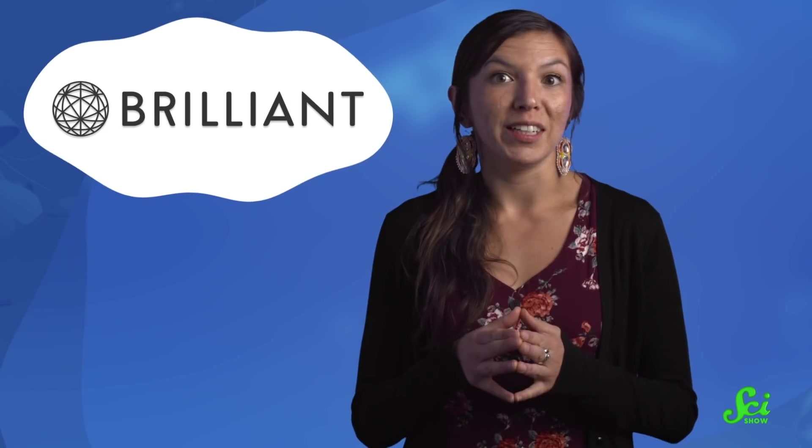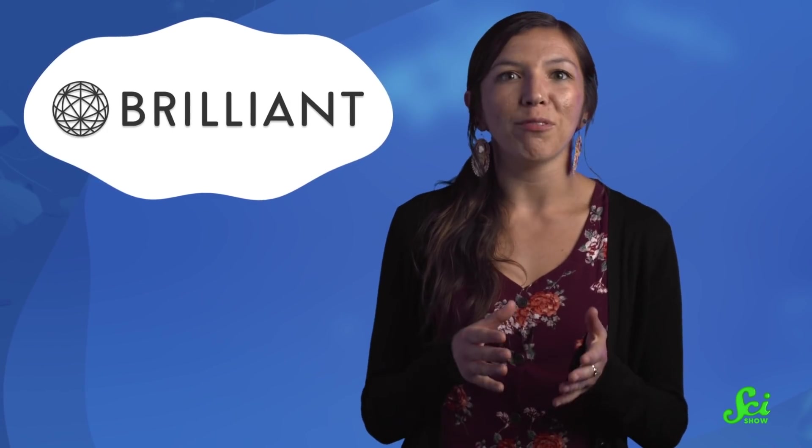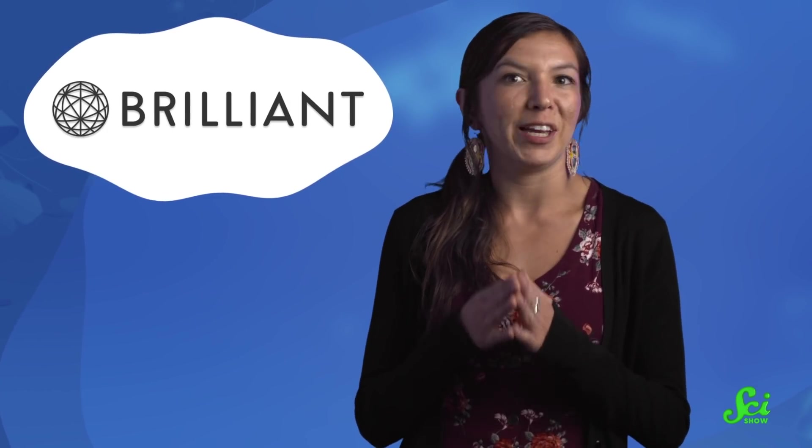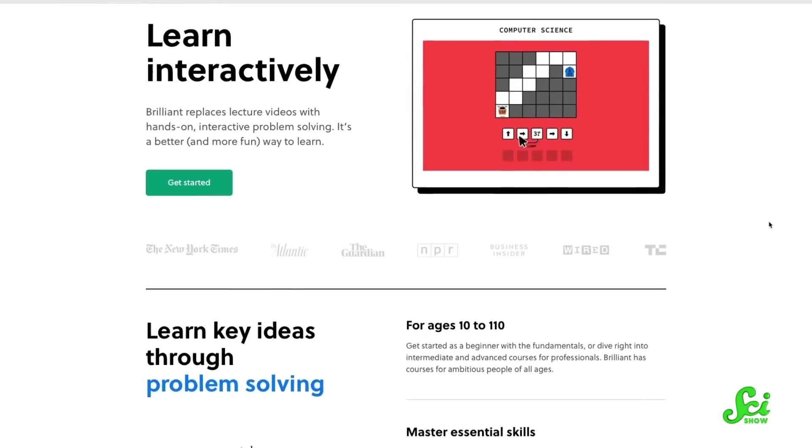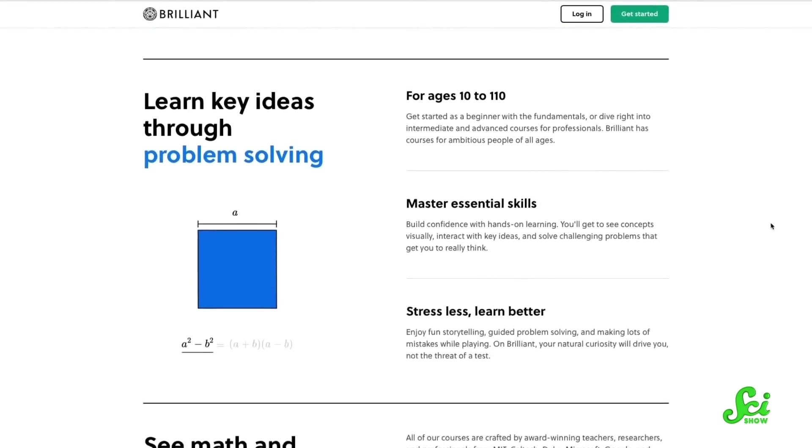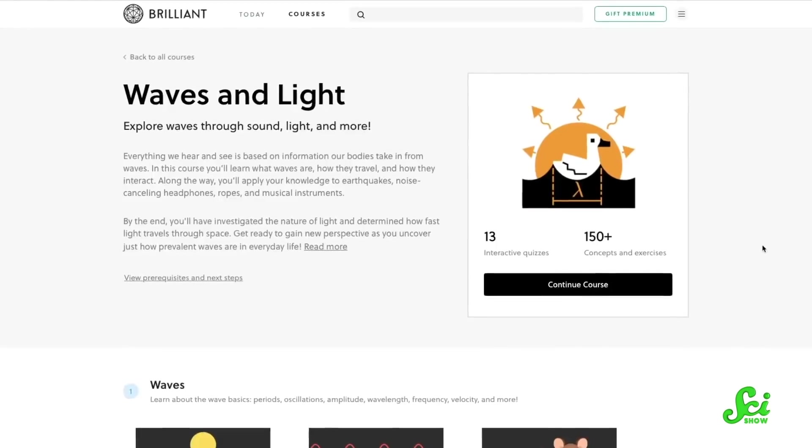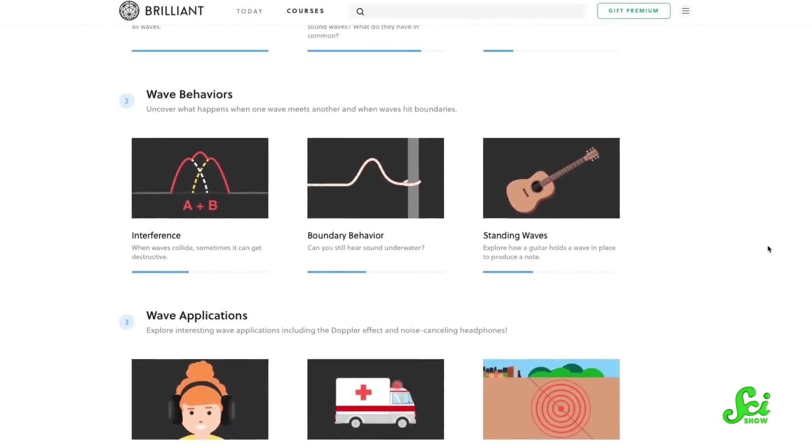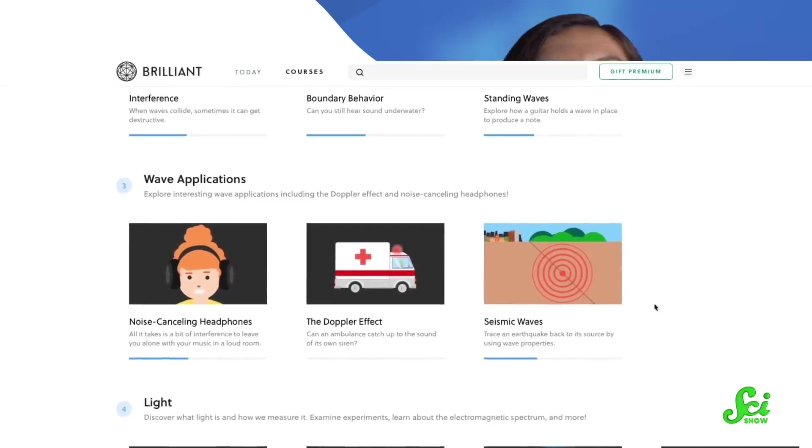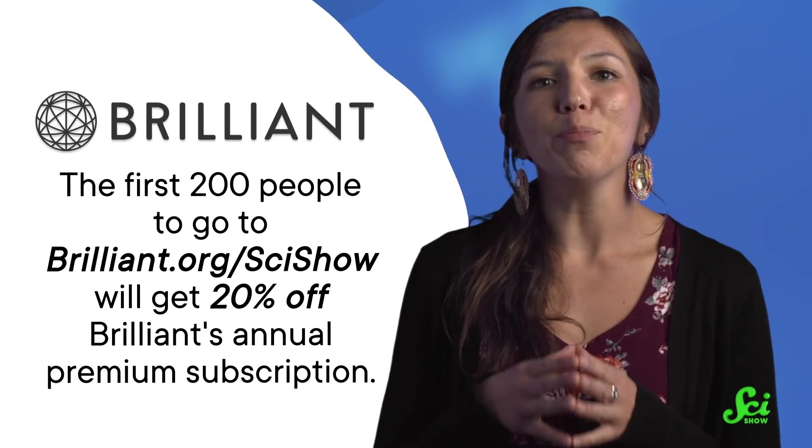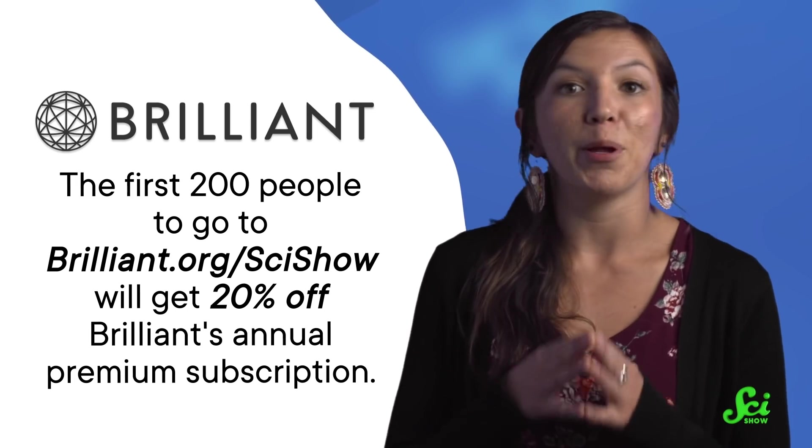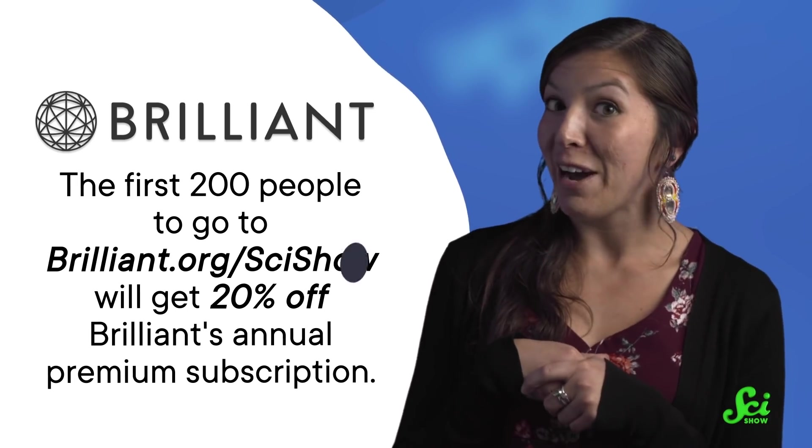Just like opening presents during the holiday season. Inside, you might find things like today's sponsor Brilliant, an interactive STEM learning platform and a perfect gift for any of the ambitious learners in your life. Or, the neighbor who seems to have everything. On Brilliant, you'll find interactive courses on scientific foundations, like Waves and Light, where you can apply that knowledge to the holiday lights or instruments at your next party. The first 200 people to go to Brilliant.org slash SciShow will get 20% off Brilliant's annual premium subscription for yourself or for someone else.